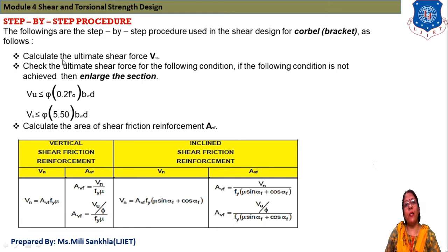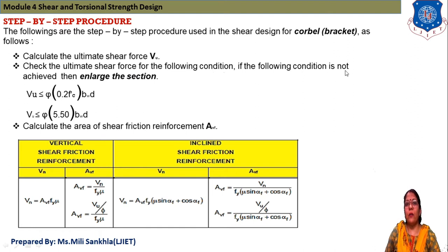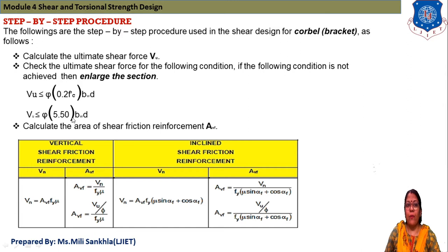First, we calculate the ultimate shear force, notation VU. Then we check the ultimate shear force for two conditions. If these conditions are not satisfied, we enlarge the section. Condition 1: VU ≤ 0.2 F'c × Bw × D. Condition 2: VU ≤ 5.5 × Bw × D.